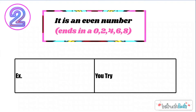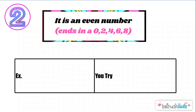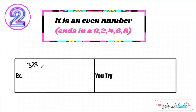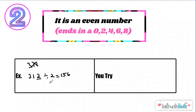Let's talk about 2. To check if a number is divisible by 2, it has to be an even number. If it ends in a 0, 2, 4, 6, or 8, then it is divisible by 2. So is 311 divisible by 2? No — you can't multiply a whole number times 2 and get 311. What about 312? Yes, it is divisible by 2 because it's an even number. 312 divided by 2 gives us 156. We just need the yes or no.